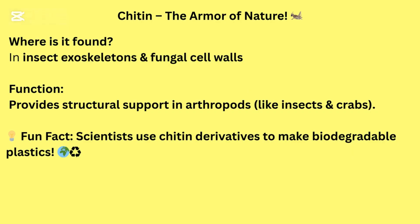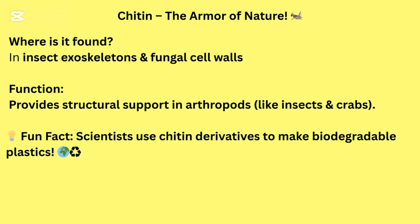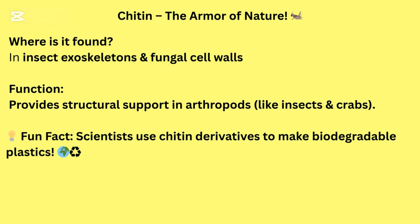Chitin — the armor of nature. It is found in insect exoskeletons and fungal cell walls. Structure: similar to cellulose but made up of N-acetylglucosamine (ANAG) instead of glucose, forming a tough protective outer shell. Function: provides structural support in arthropods, like insects and crabs. Fun fact: scientists use chitin derivatives to make biodegradable plastics.